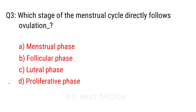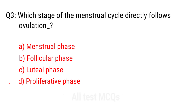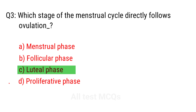Q3. Which stage of the menstrual cycle directly follows ovulation? The right answer is option C: Luteal phase.